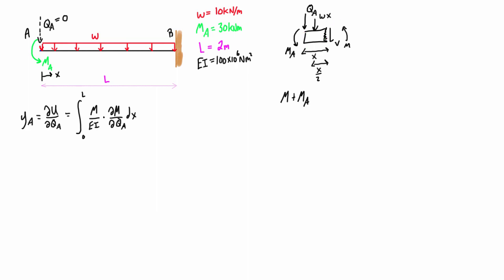We'll start off with we have M plus MA. These are all going to be going in a counterclockwise sense around this point, so plus QA times X plus WX times X over 2, and this has to be equal to 0 for the sum of moments.